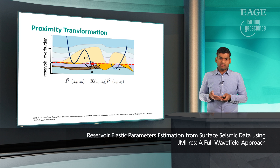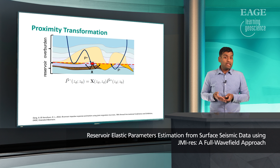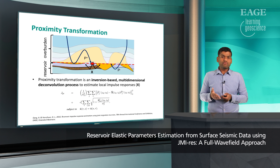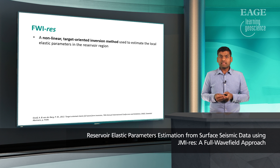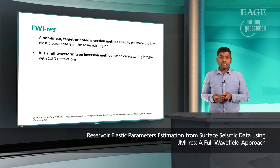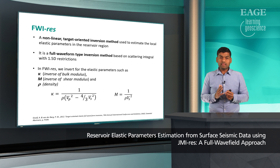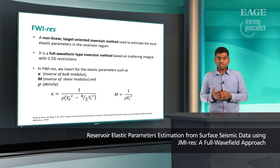When we have the up- and down-going wave fields at our reservoir level, we can estimate the local impulse responses using multidimensional deconvolution. However, multidimensional deconvolution is a very ill-posed problem, so we use an inversion-based multidimensional deconvolution along with sparsity and porosity constraints — we call this whole process proximity transformation. We then use FWI-res to estimate the elastic parameters: it's a nonlinear target-oriented inversion method and a full waveform-type inversion based on scattering integrals. In FWI-res, we invert for elastic parameters such as kappa, M, and rho, because these parameters are much more closely related to hydrocarbon saturation and porosity compared to impedances and velocities.